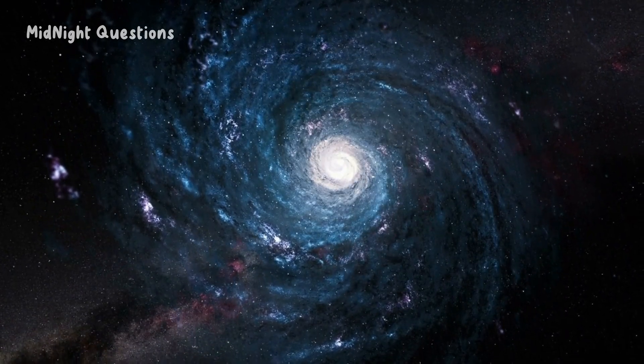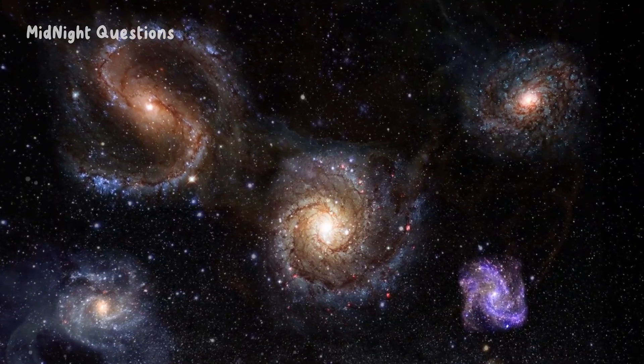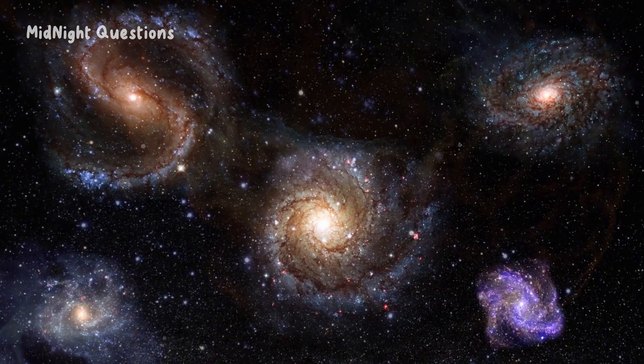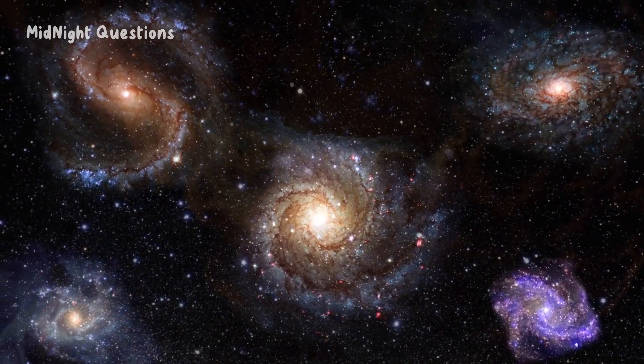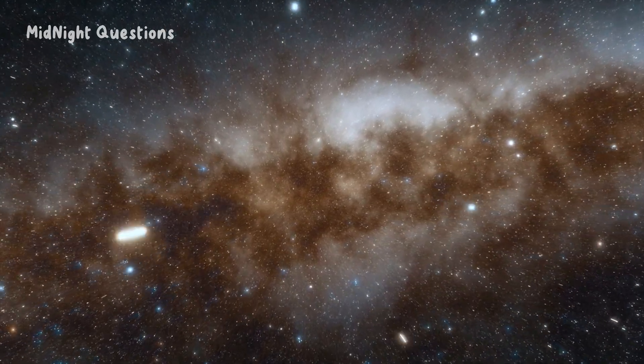One of the most common misconceptions about the universe is that it is made up of just a few galaxies. In reality, there are estimated to be over 100 billion galaxies in the observable universe. Each galaxy can contain billions of stars, many of which have their own planets and moons.